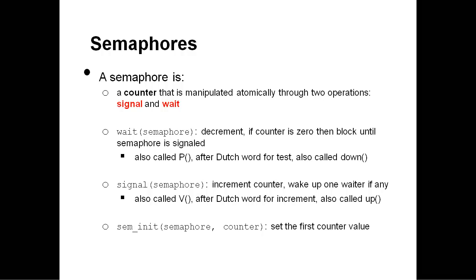On the wait operation, the counter is decremented. If the counter is zero, then the wait operation will block until another thread signals the semaphore. This is how you wait for things to happen — by calling wait on a semaphore. This is also called P in the original version, which is for the Dutch word for test, because Dijkstra lived in the Netherlands, and it's also called down in some implementations. The second operation is signal, which increments the counter, and if any threads are waiting, it wakes one up. This is also called V, after the Dutch word for increment, and also called up. The third operation is the initialization function, something like sem_init, which takes a semaphore and sets the initial counter value. We'll see later on why this is an important thing to be able to do.